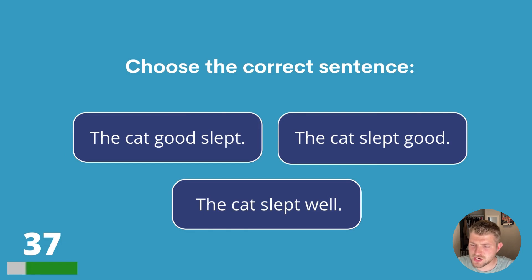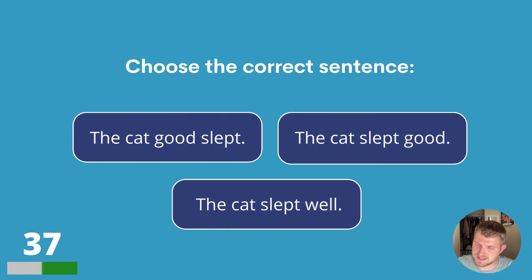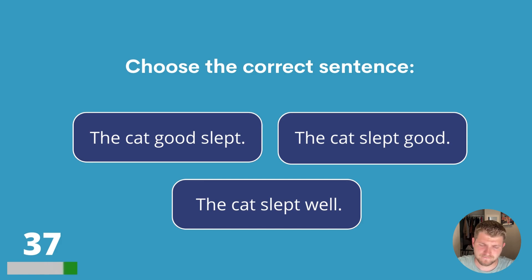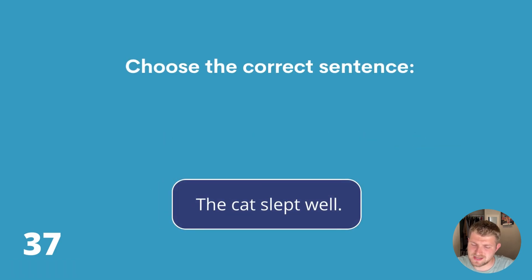Question thirty-seven. Choose the correct sentence. The cat good slept, the cat slept good or the cat slept well? The answer is the cat slept well.